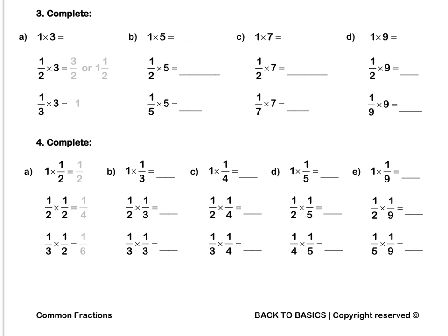Question 3. 1 times 3 is 3. A half times 3 is 3 over 2, or 1 and a half. A third times 3 is 3 over 3, or 1 whole.